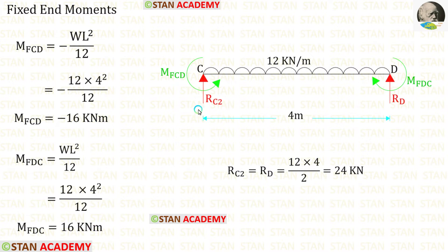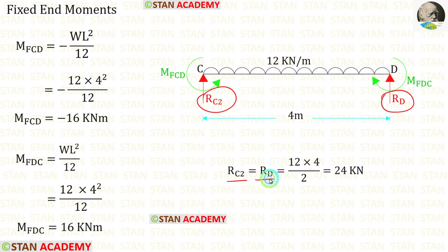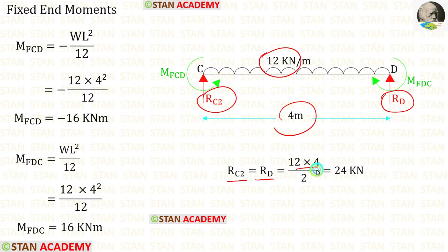Now let us find the vertical reactions RC2 and RD. In span CD, we have symmetrical loading, so we can easily find RC2 and RD. We multiply the UDL 12 by the distance 4 and divide by 2. We get RC2 and RD as 24 kN each.